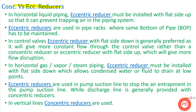Now let's look at the differences between concentric and eccentric reducers and where each is used. In horizontal liquid piping, eccentric reducers must be used and must be installed with the flat side up. This prevents air trapping — if the tapered side is up, air can get entrapped in the pipe or equipment and may damage the equipment.